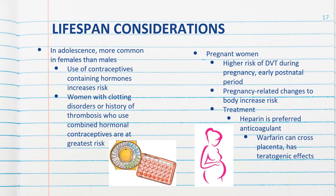During adolescence and young adulthood, thrombosis is twice as likely to occur in female patients than in male patients. One factor placing young women at greater risk is the use of contraceptives containing estrogen and progestin — combined hormonal contraception. Use of combined oral contraception increases the risk of thrombosis three to four times, although other combined contraceptive methods can increase risk as well.